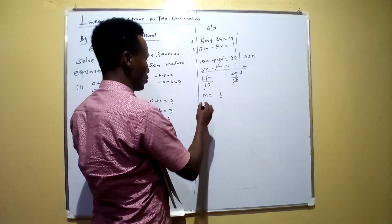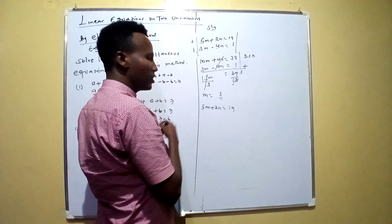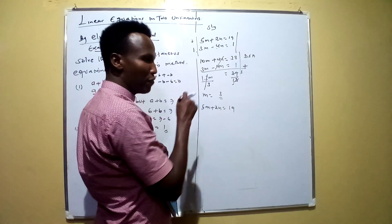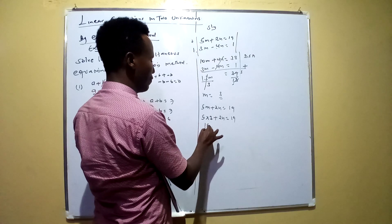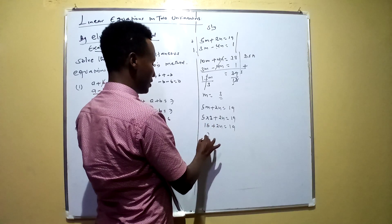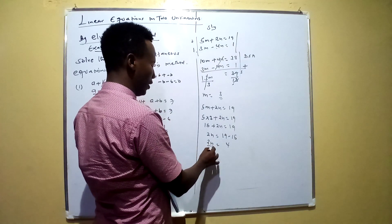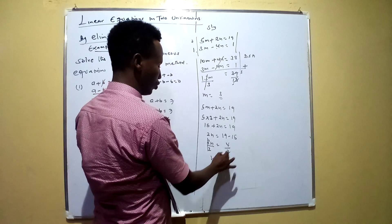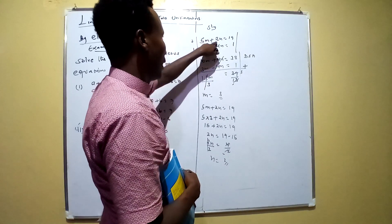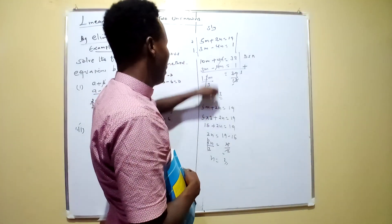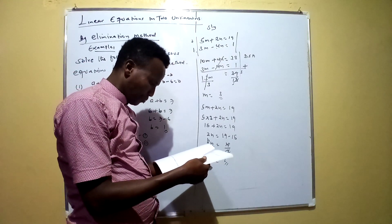Now substitute the value of m to find n. Taking equation one: 5m plus 2n equals 19. Substitute m equals 3: 5 times 3 plus 2n equals 19, which gives 15 plus 2n equals 19. Taking 15 to the other side: 2n equals 4, so n equals 2. To confirm: 5 times 3 plus 2 times 2 equals 15 plus 4, which is 19. Correct.